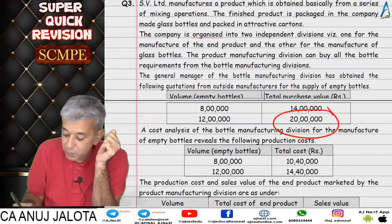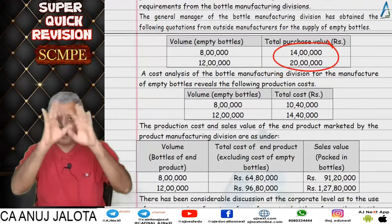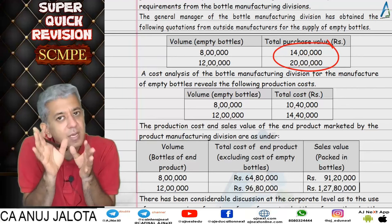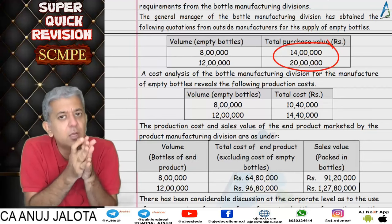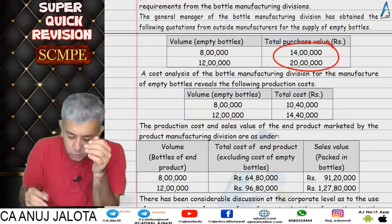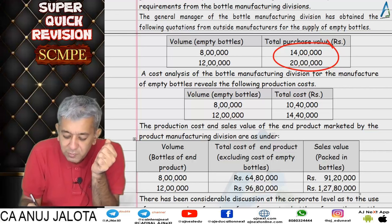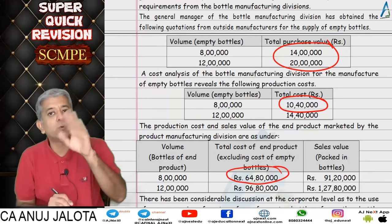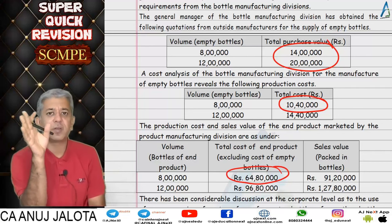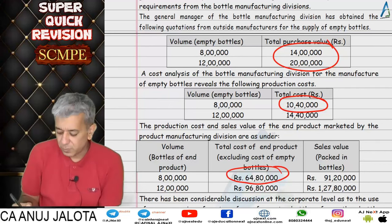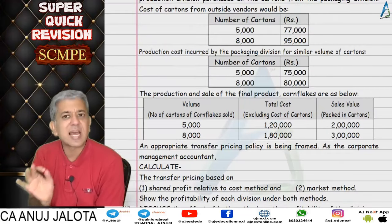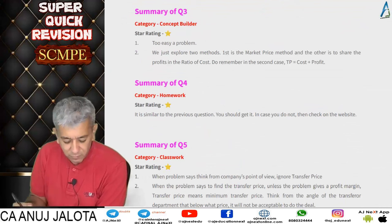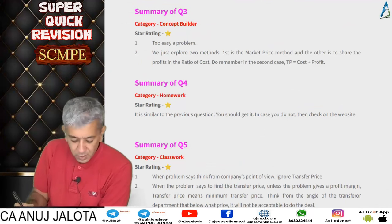For the shared profit method, we first calculated the whole company's profitability. Remember: different methods lead to different profit distributions among departments, but the company's total profit remains the same. We then divided the company profit in the ratio of actual cost between the two divisions. The first division's cost was 10,40,000 and the second division's cost was 80,00,000. The question had to be solved twice — once based on 8,000,000 bottles and once on 12,000,000 bottles. Question number four was exactly the same as question three with different numbers, so it was kept for homework.